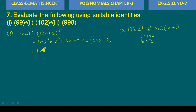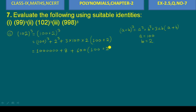Now, 100³ = 100 × 100 × 100 = 1,000,000. Then 2³ = 2 × 2 × 2 = 8. And 3 × 100 × 2 = 600, multiplied by (100 + 2), that is 600 × 102.